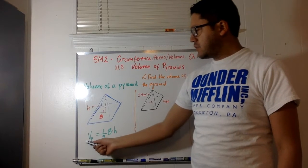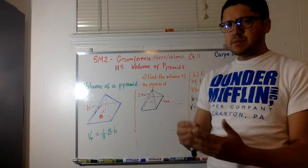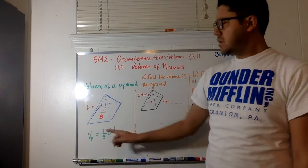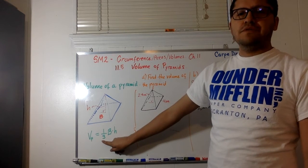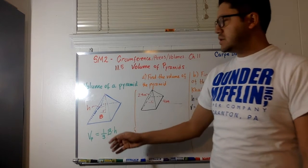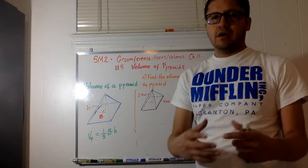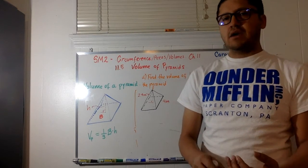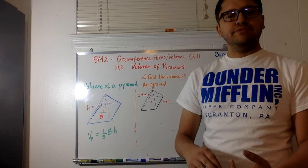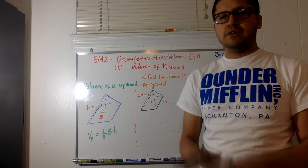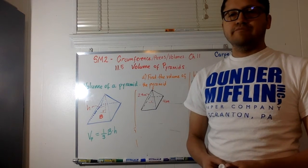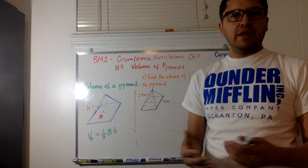Basically, the formula of the volume of a pyramid is very similar to the ones that we've done before, with the only difference that we have a one-third multiplying here. In this case, we're going to take into account the area of the base, which can be either a triangle, rectangles, or usually squares, or any other type of polygon in general.